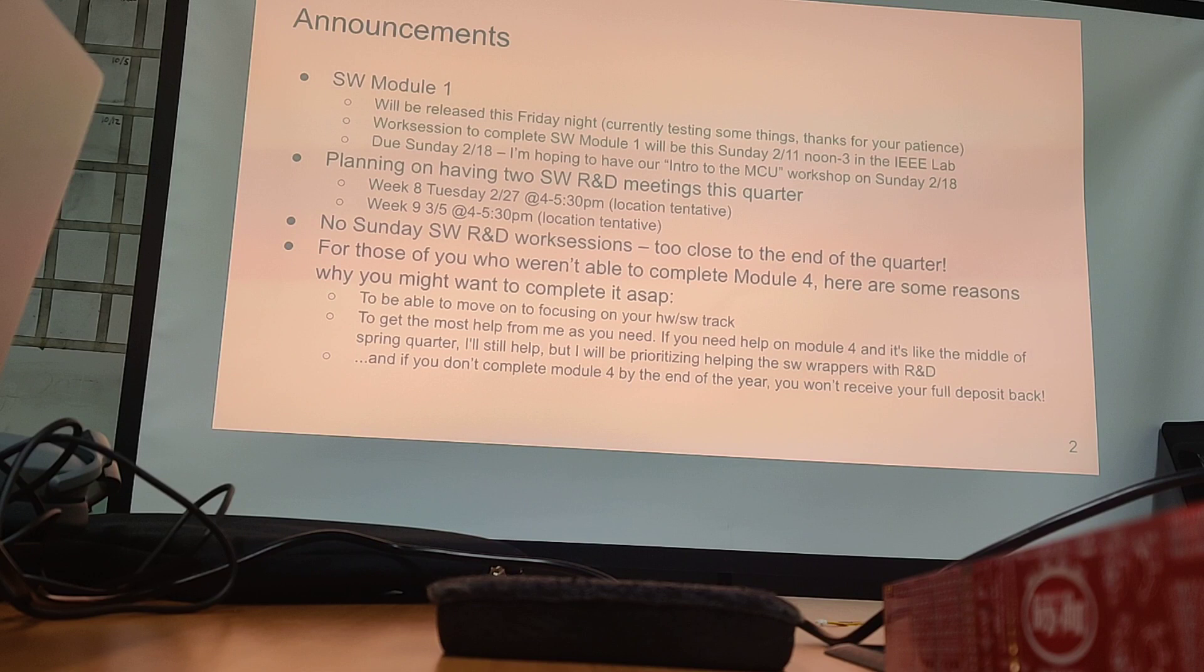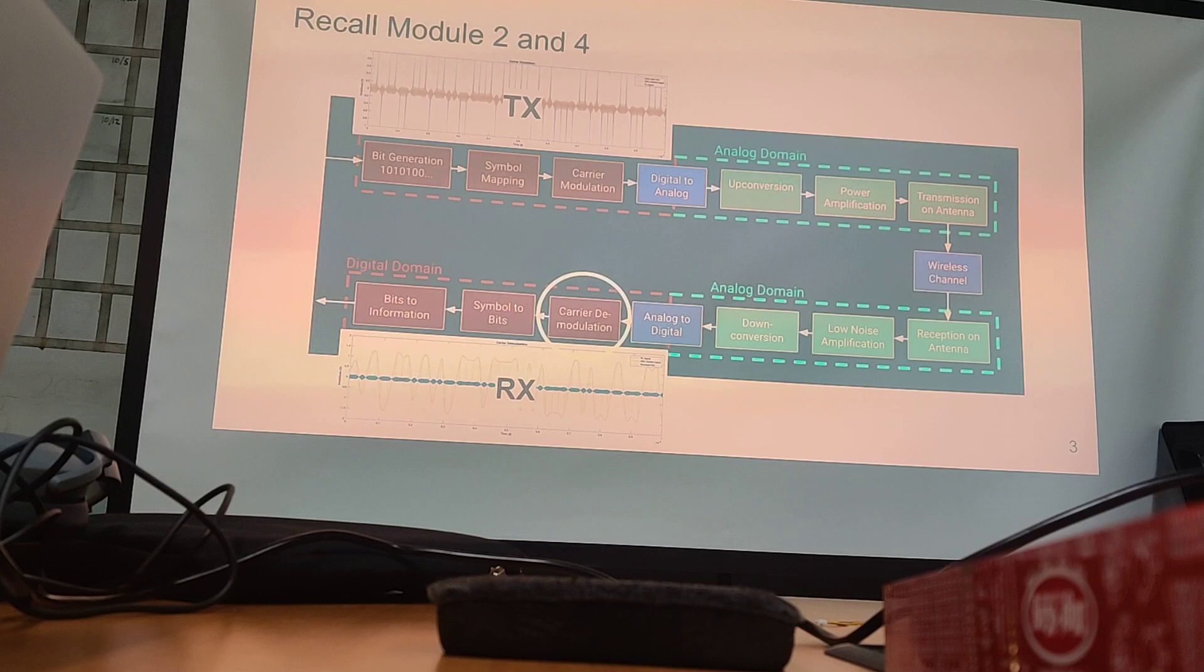If you haven't done module four, please do it. Cool. Questions on logistics? We're good? Okay. So, starting to get back into content. The last module, module four, was all about the CASAS loop, which, the whole gist of it is that when we do carrier demodulation, we need to be mindful of the time delay between the transmitter and the receiver. Hopefully, we all have done module four and understand that. And also, in the last lecture, we talked about three big issues with our receiver.